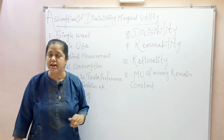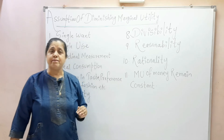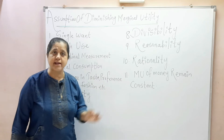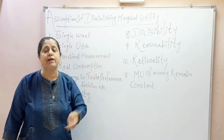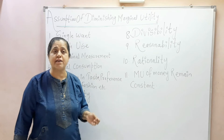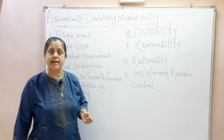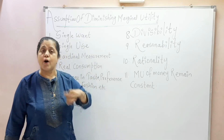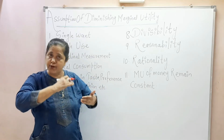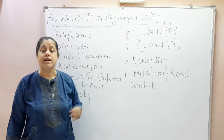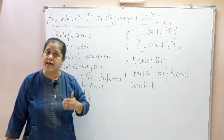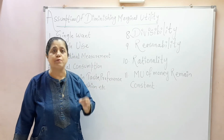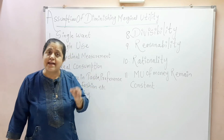Phir usi ko hamni diagram mein convert kiya. Diagram mein hamni dekha ki law of diminishing marginal utility mein marginal utility ka curve is sloping downward from left to right. It intersects the x-axis where utility is zero. Beyond that, it enters into the negative quadrant, jaha aapki satisfaction negative thi, jho hamni shaded area se dikhaya — it is disutility. Yaani aapko satisfaction nahi, dissatisfaction mila.